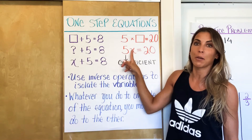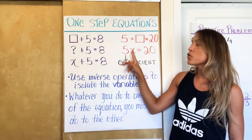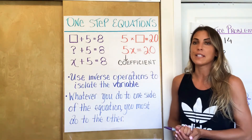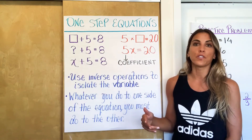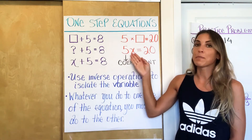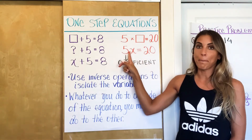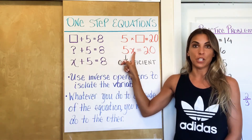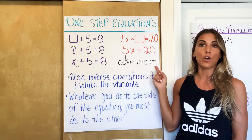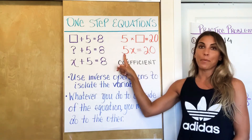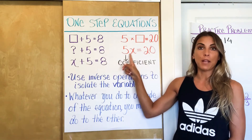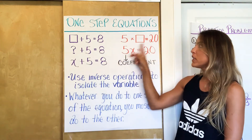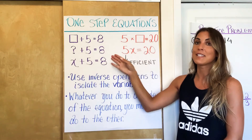A variable is a letter taking the place of a number — it's asking you to find what number makes this true. There's no multiplication sign written here. As you get older in your math career, you're more likely to see multiplication written this way: when you see a number next to a variable with nothing in between — no addition sign, no subtraction sign — it means multiplication. This number has a special name: it's called the coefficient. The coefficient is the number next to the variable being multiplied by it, and you know it's multiplication because there's nothing in between.